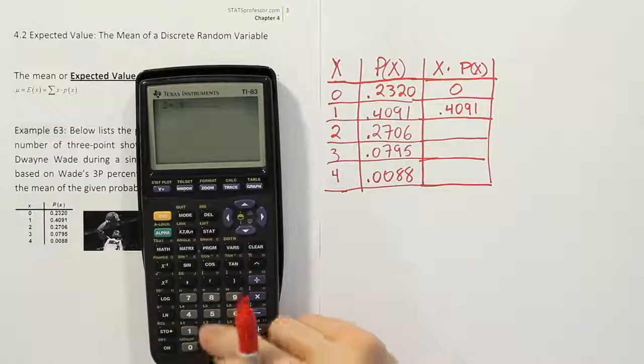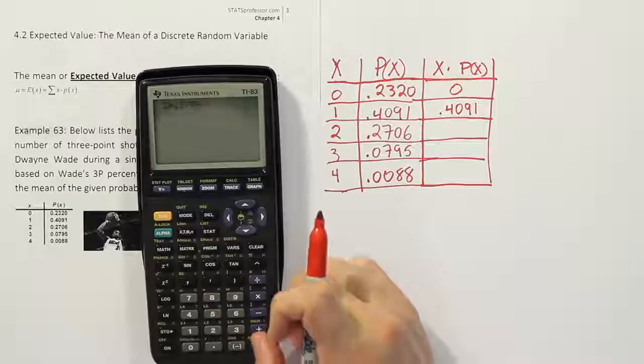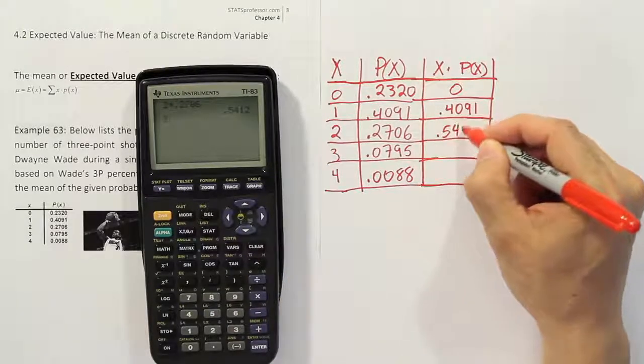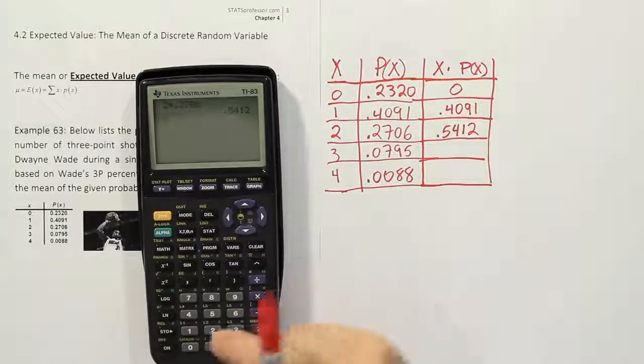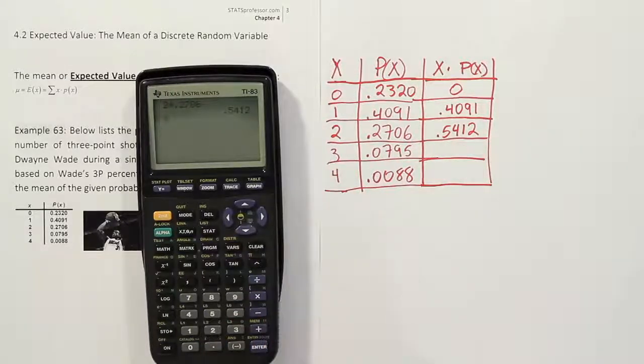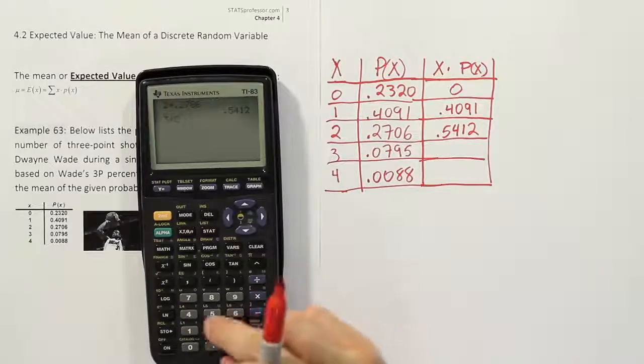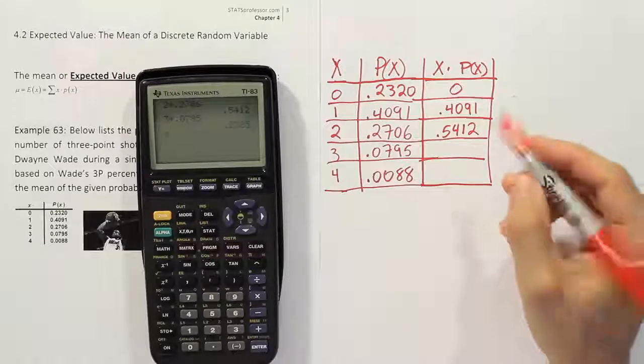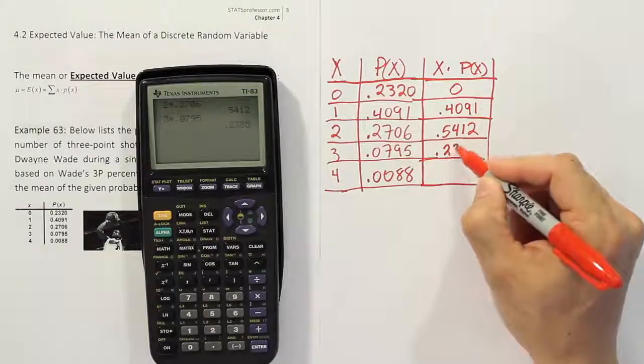We'll do 2 times 0.2706, right? So it should give us 0.5412. That's correct, 0.5412, and then we'll have 3 times of roughly 8, so it should be close to 0.4. Let's say it's 3 times 0.0795, and sure enough, we get 0.2385.